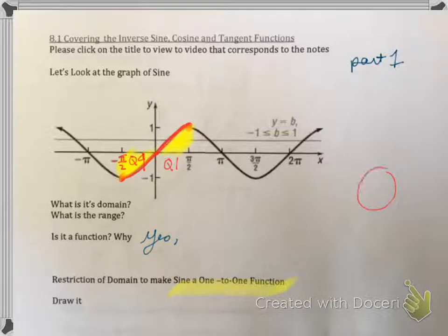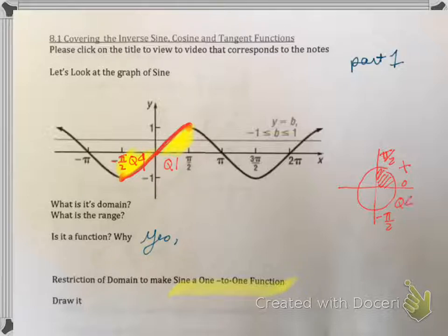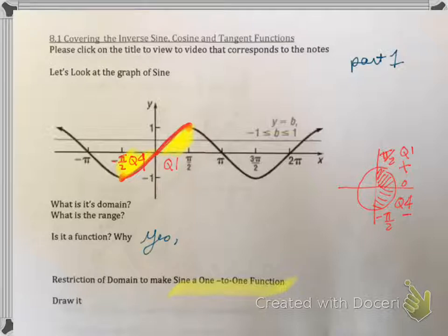This is quadrant number four, this is negative pi over two. So I restricted the graph of sine, made it one to one, and I made sure that I had one quadrant that was positive and one quadrant that's negative. From zero to pi over two is quadrant one, sine is positive there, and then from zero to negative pi over two, this is quadrant four, sine is negative here. So we're going to draw the restricted graph of sine of x, then take the inverse of it and talk about what that means.